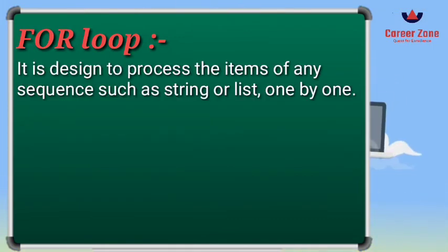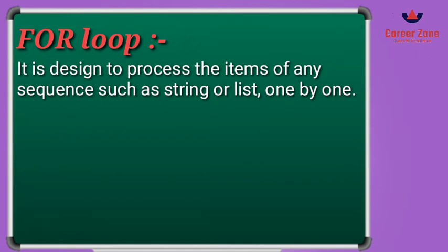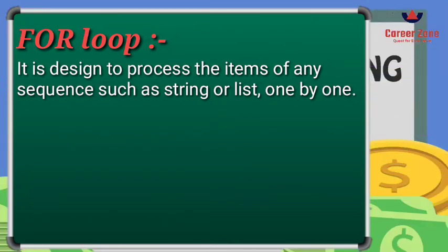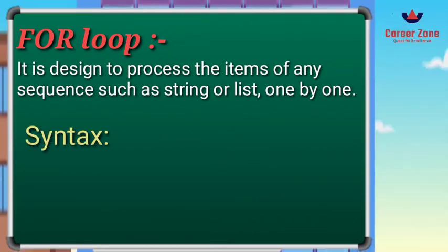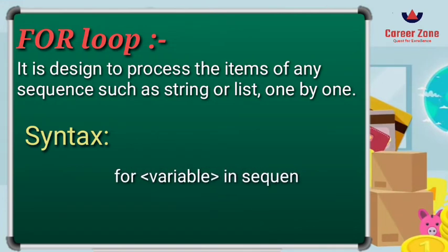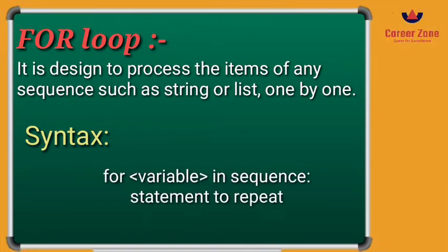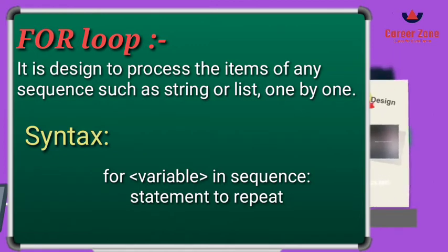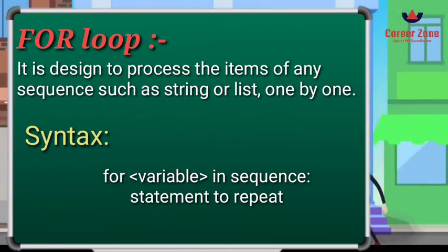We will now study the for loop. The for loop is basically designed to process the items of any sequence — whether it is a list or a string — one by one. If you want to access items in a sequence, you can do it by defining a for loop. The syntax is: for variable in sequence: followed by the statement to repeat. You start with for, then a variable name — it can be any name such as a, b, c — then in, and then the sequence.